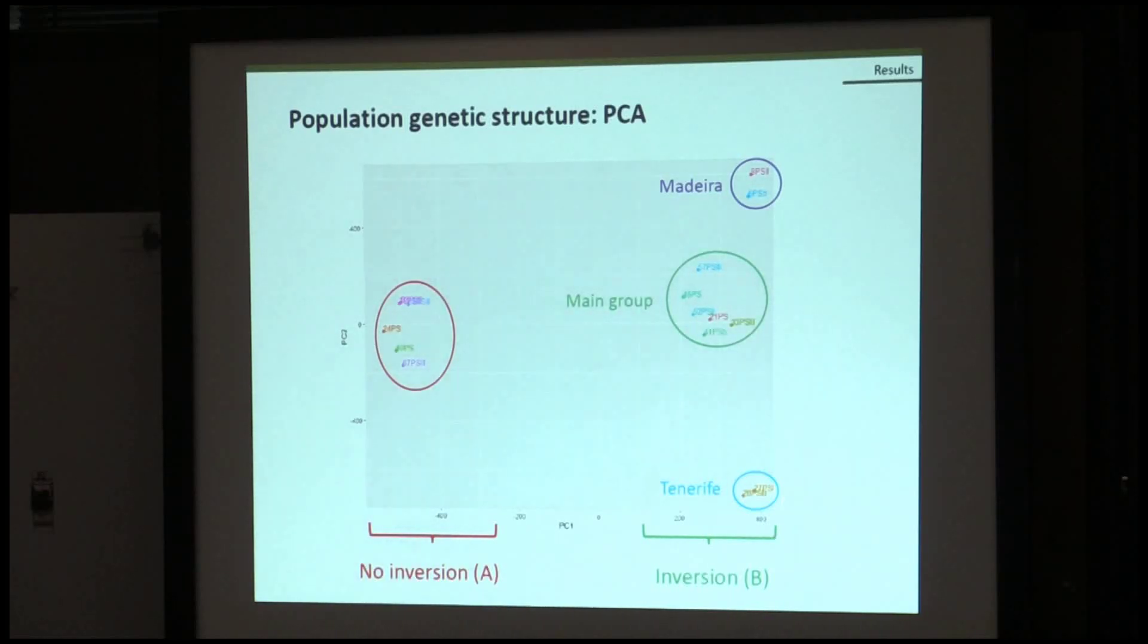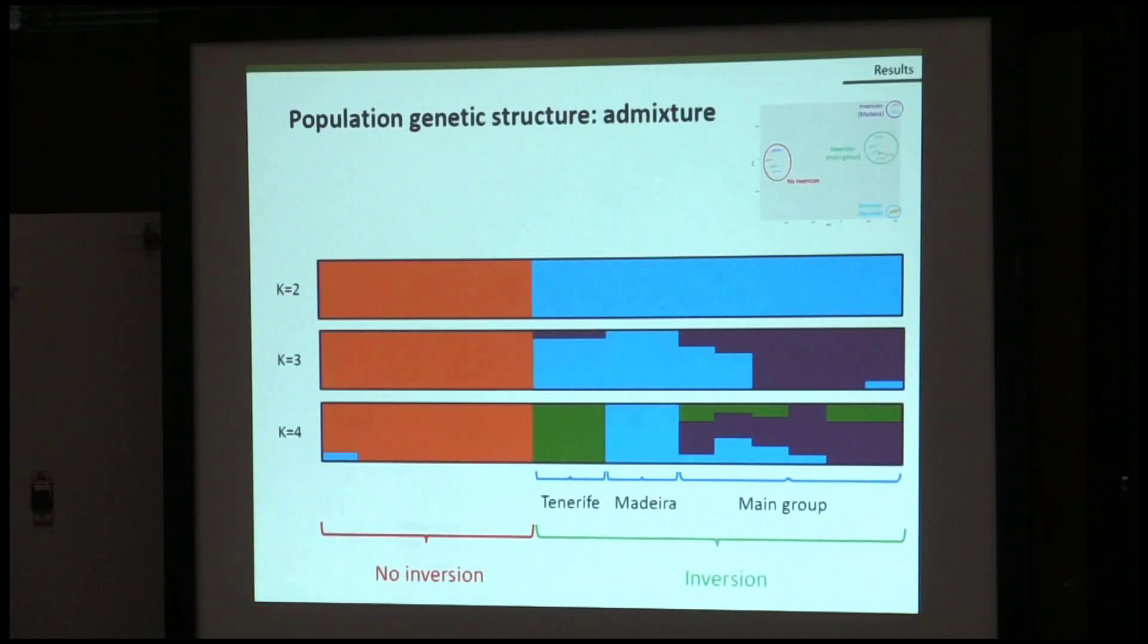After that we carried out some analysis with ADMIXTURE, where we can see a similar pattern. With K set to 2, the main separation is among individuals without and with inversion. And with K set to 4, those samples from Tenerife and Madeira are separated from the other samples.